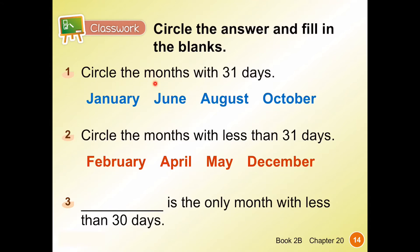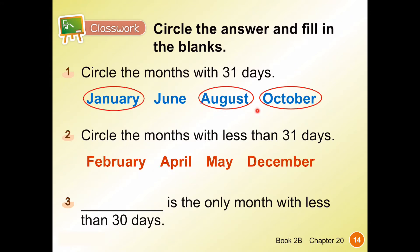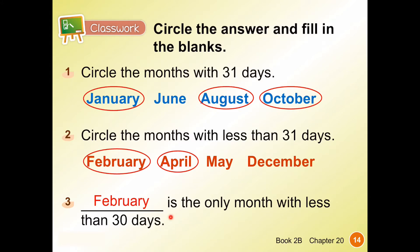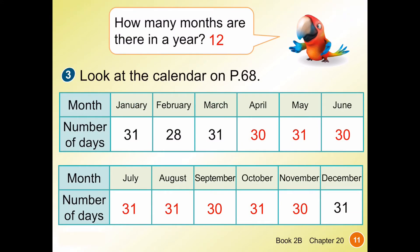For classwork question one, circle the months with 31 days — we did that just now, so it shouldn't be hard. January, August, and October. Circle the months with fewer than 31 days — February and April have fewer than 31 days. February is the only month with fewer than 30 days. For question three, January, March, May, July, August, October, and December all have 31 days. April, June, September, and November have 30 days, and February is the only month with fewer than 30 days.